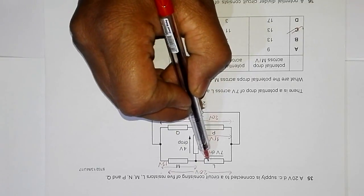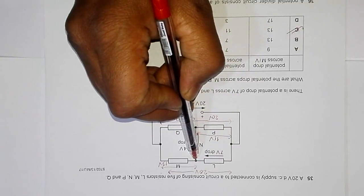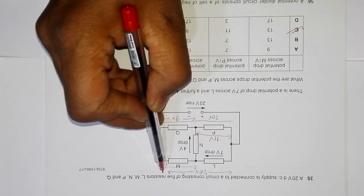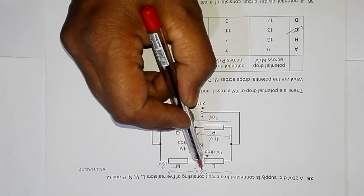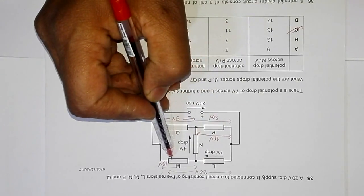Now if you look here, the PD across L is 7 volt and the PD across here is 20 volt, so the PD across M should be 20 minus 7 equal to 13 volts.